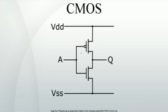CMOS circuits are constructed in such a way that all PMOS transistors must have either an input from the voltage source or from another PMOS transistor. Similarly, all NMOS transistors must have either an input from ground or from another NMOS transistor.